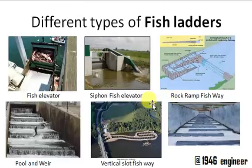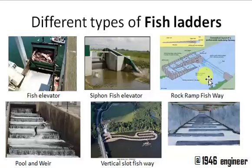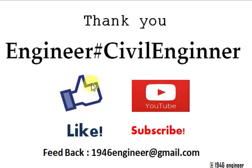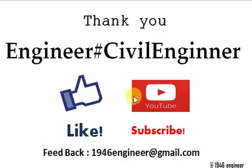Fish ladders are passages or provisions made for fish to migrate from one side of the irrigation structure to the other side. If you understand the basic concept, please hit the like button and subscribe to my channel Engineer Hash. If you have any doubts, please mail or comment. Thank you for watching.